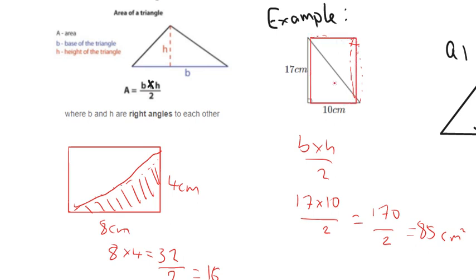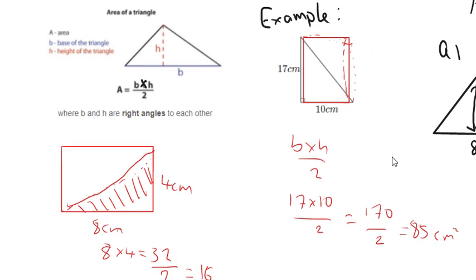And the area of that rectangle would be 17 times 10. But again, we can see that really it's half of that rectangle. So it's 17 times 10 divided by two. You don't really need to understand why and all about the rectangle there, but that's just why the formula works. So really the main thing you have to remember for area of a triangle is base times height divided by two.